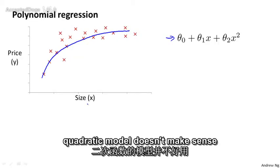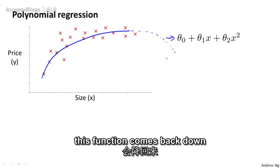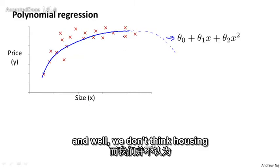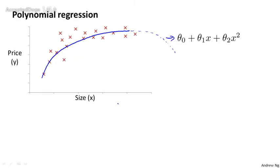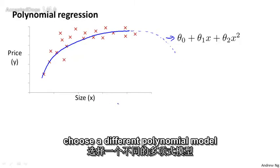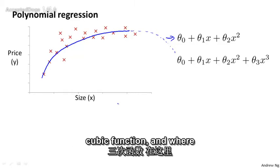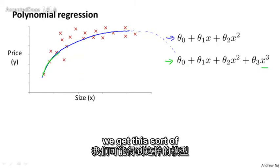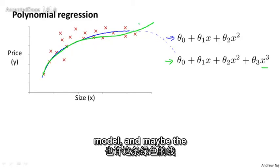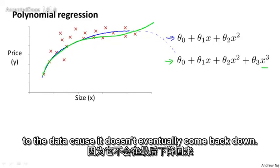But then you might decide that a quadratic model doesn't make sense, because of a quadratic function, eventually this function comes back down. And we don't think housing prices should go down when the size goes up too high. So then maybe we might choose a different polynomial model and choose to use instead a cubic function. And where we have now a third order term and we fit that, maybe we would get this sort of model. And maybe the green line is a somewhat better fit to the data, because it doesn't eventually come back down.